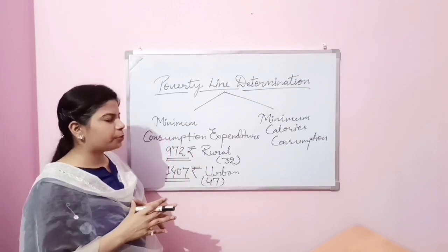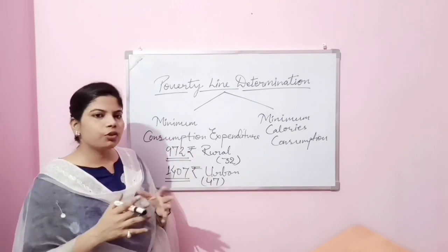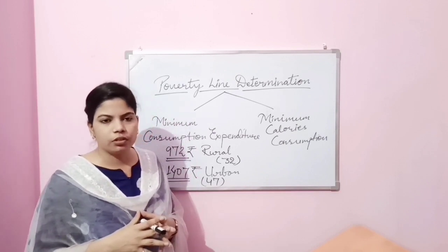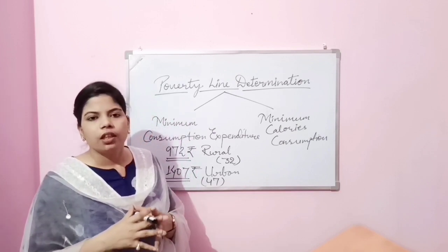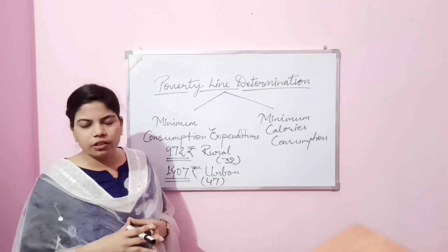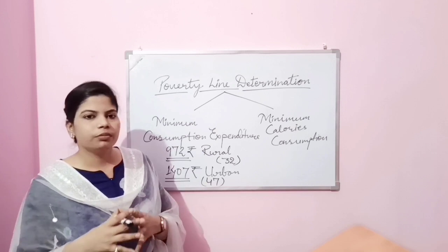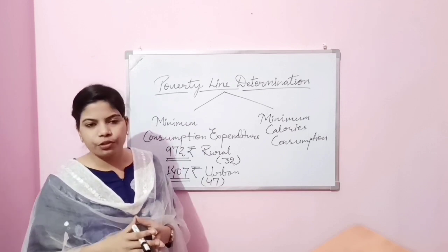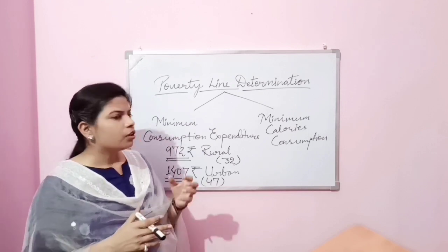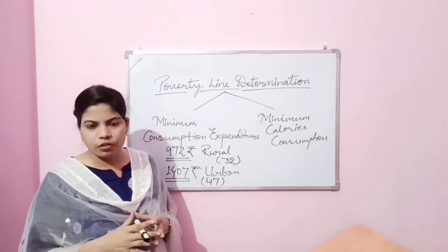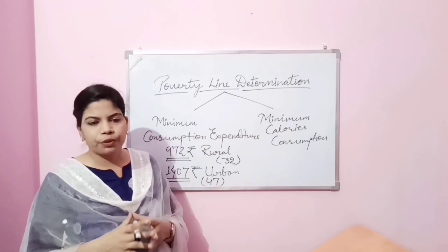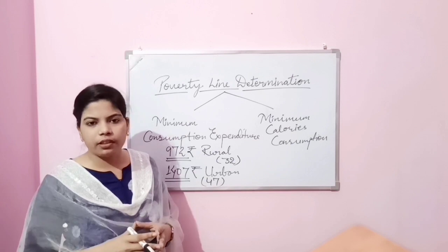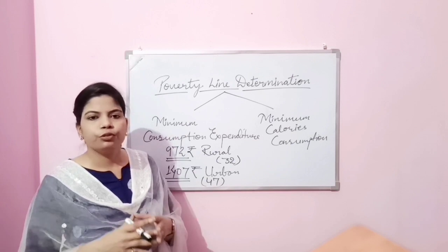The minimum consumption expenditure is also globally decided by the World Bank — it is 1.90 US dollars per person per day. If a person is not able to spend 1.90 dollars per day, they belong to below poverty line according to the World Bank.